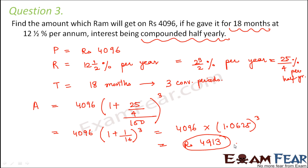The main catch with compound interest is to look at the time period, find how many conversion periods it contains, and ensure the rate of interest matches the conversion period. If each conversion period is six months, the rate must be per half year. If three months, per three months. The rate and conversion period must always correspond. That is the most important point in compound interest.